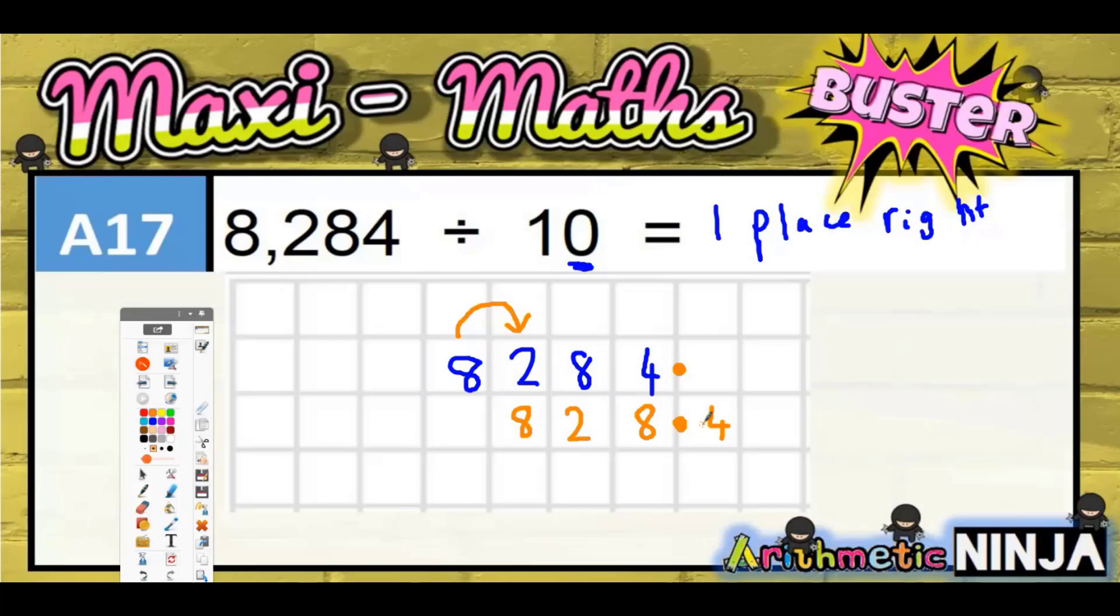Each square is its own place value. So if you've got two digits in a single square, you've got two digits in a single place value. That's going to lead to confusion.